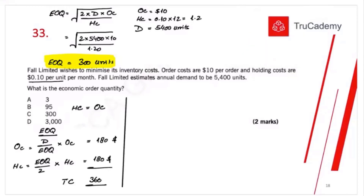A student asks for clarification on the two formulas. The ordering cost formula is logical: total demand of 5,400 ÷ order size of 300 gives the total number of orders placed to meet annual demand. For holding cost, EOQ ÷ 2 gives the average inventory held — since we order 300 units and hold them until stock reaches zero, the average is 150 units. Multiply by the holding cost per unit to get total holding cost.